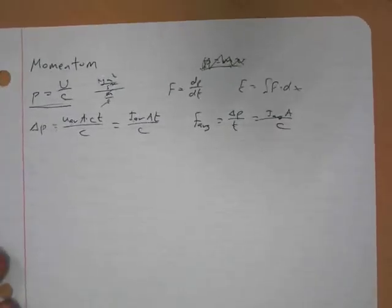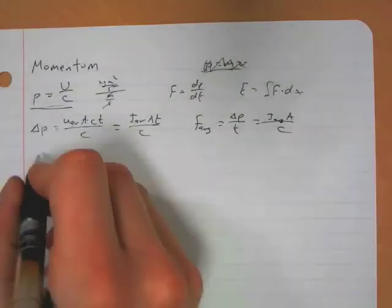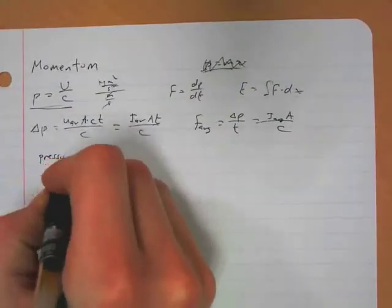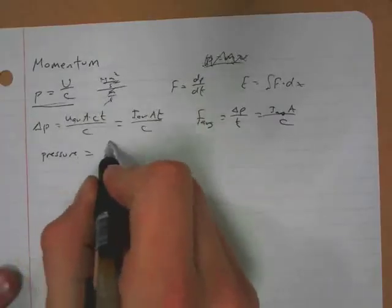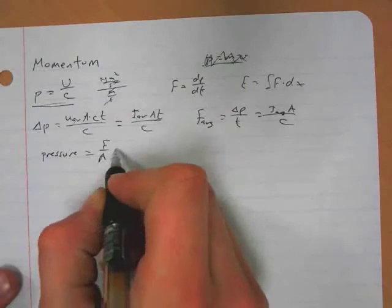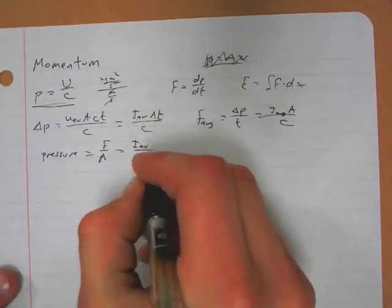So a light beam actually gives you a force, which is kind of weird. And remember, a pressure, which we called p, but I'm going to write out the word pressure because we have momentum here also, is equal to a force per area. So pressure is just an average intensity over the speed of light.